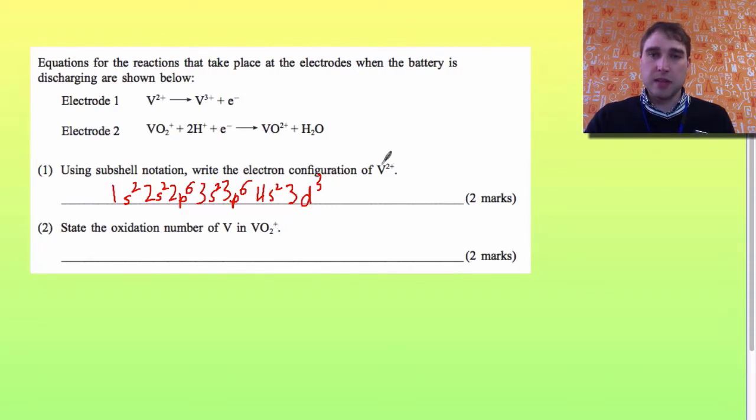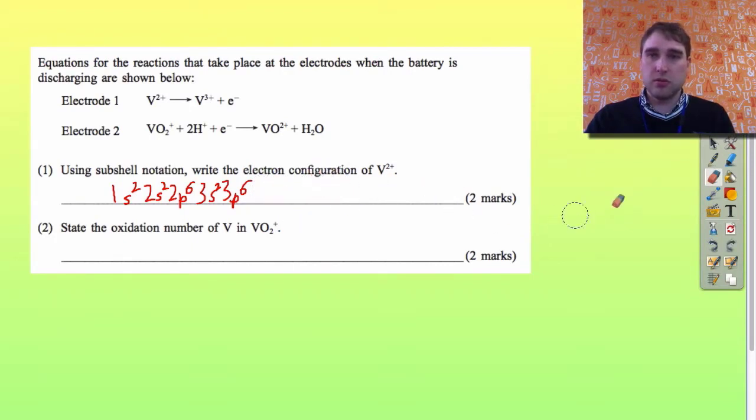So to make the 2+ ion we're going to get rid of the 4s2 electrons there. I'll just get rid of the last bit here and go 3d3. Now if I add this up it should add up to 21 because we've lost the 2 electrons. So 2, 4, 10, 12, 18, 19, 20, 21. There we go.